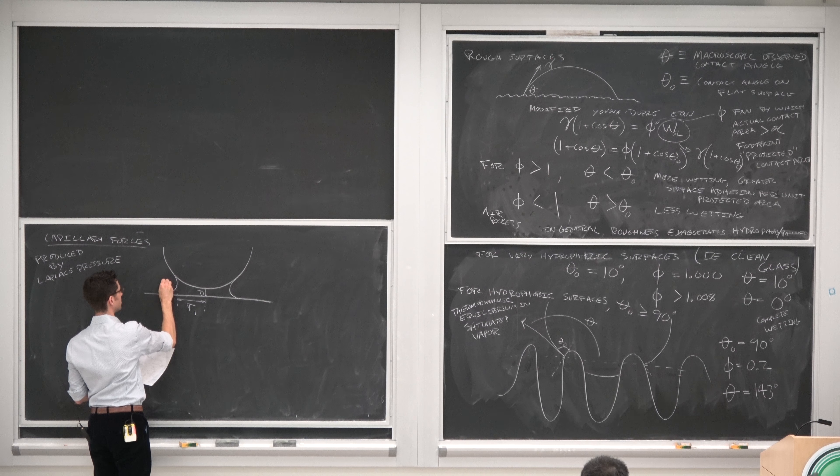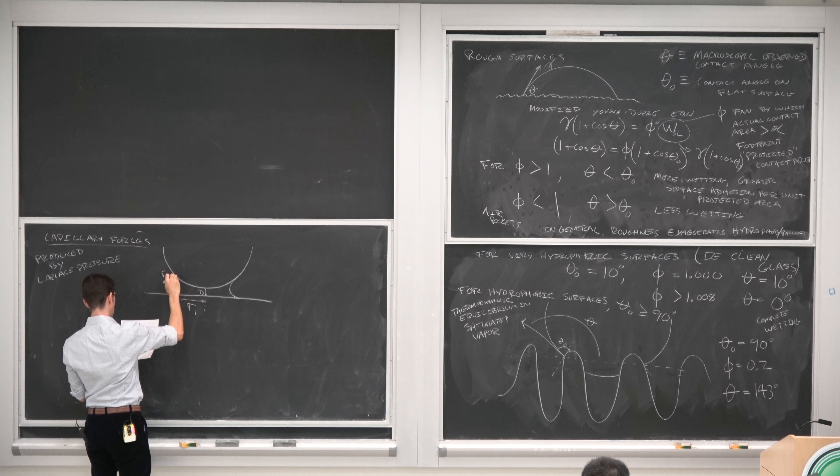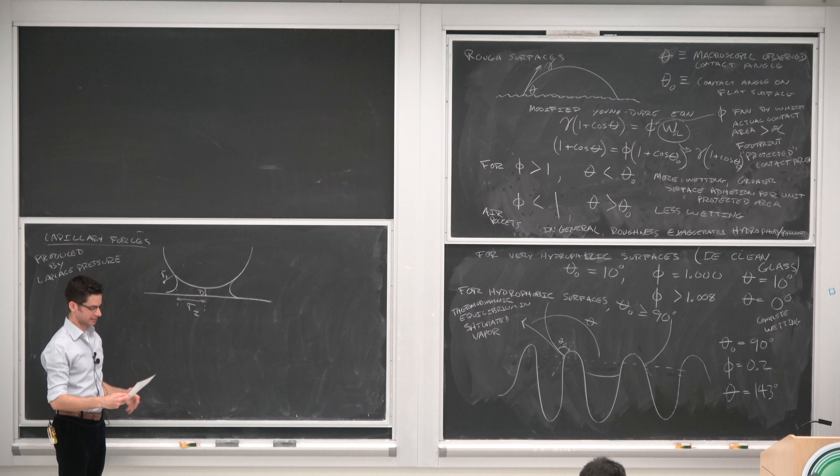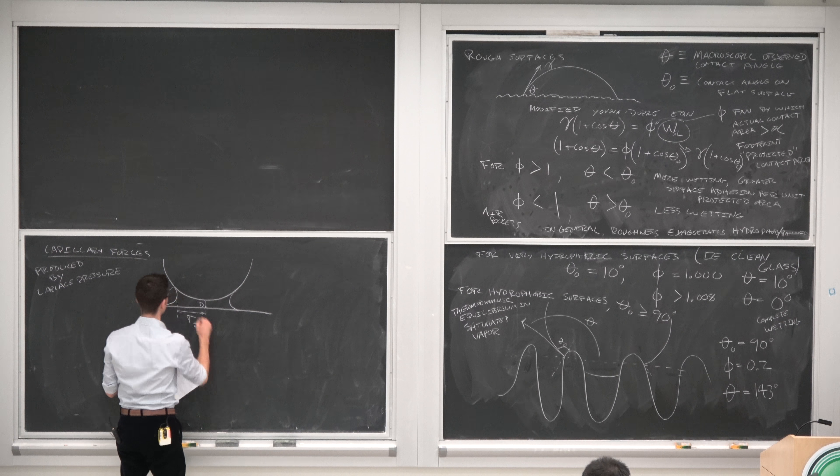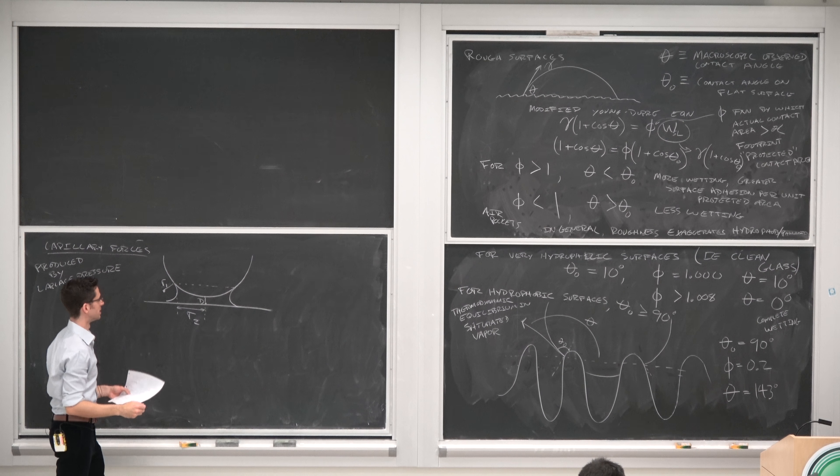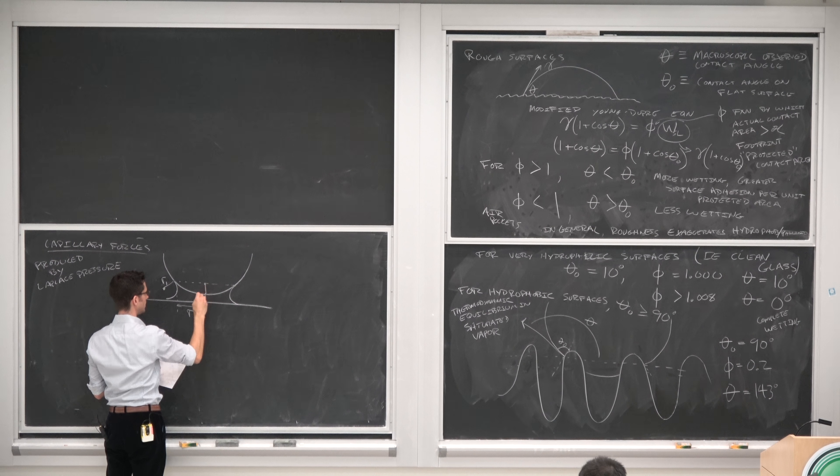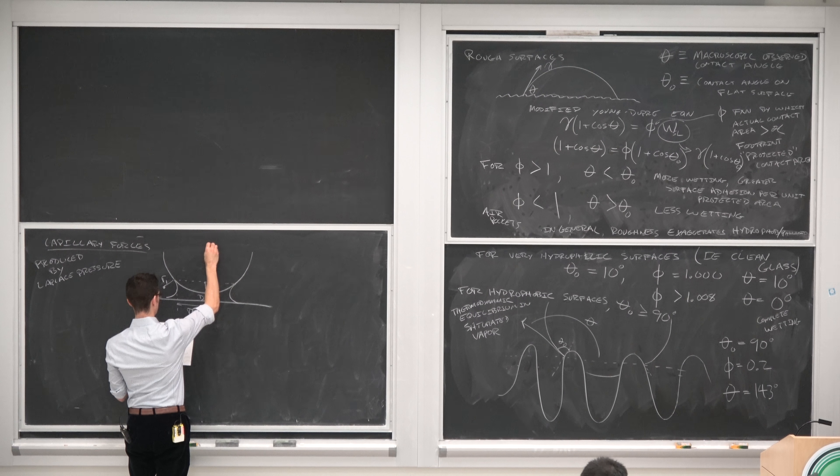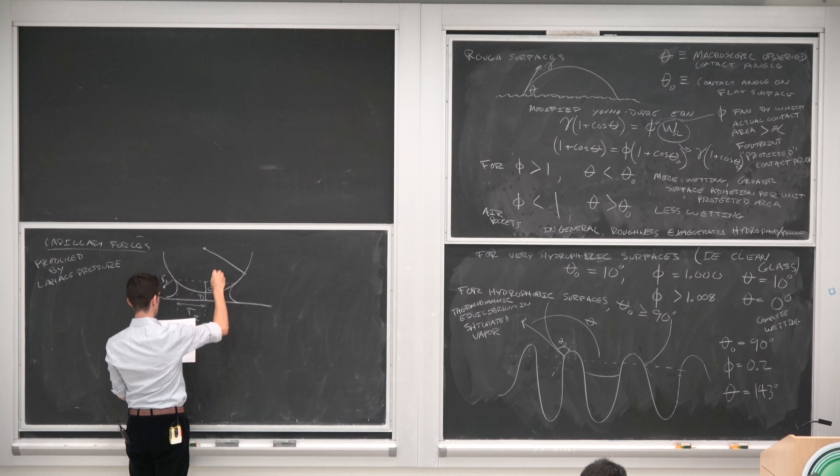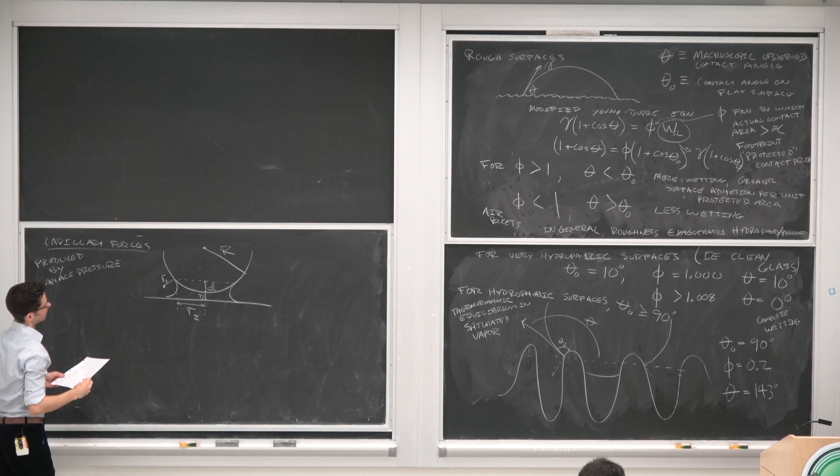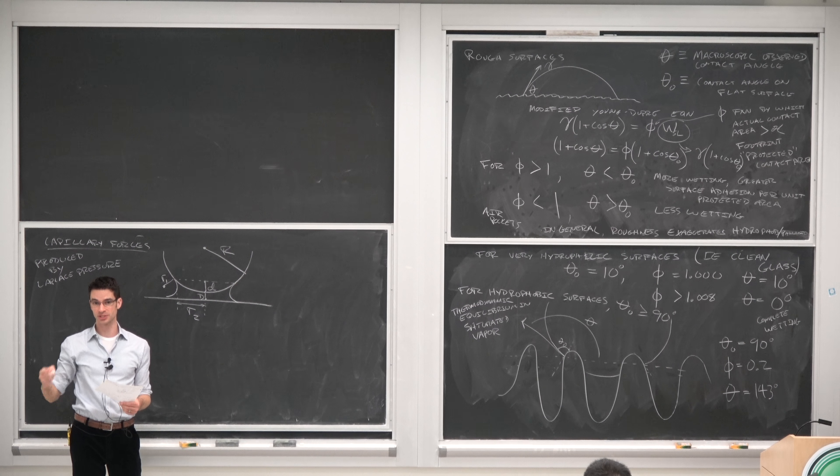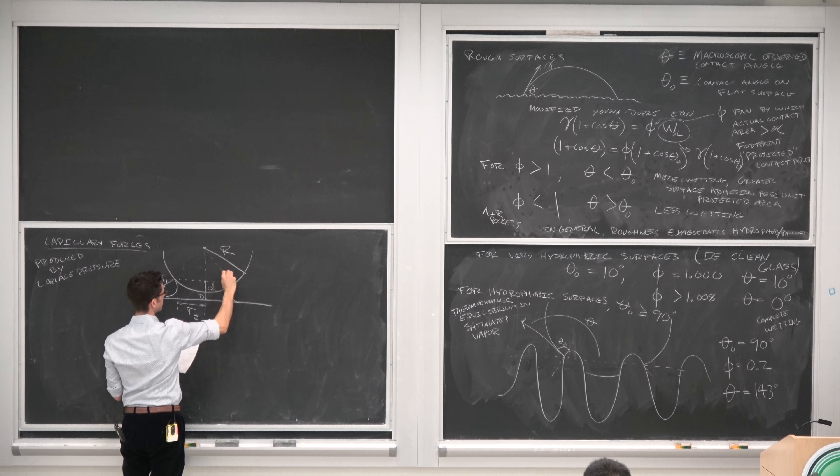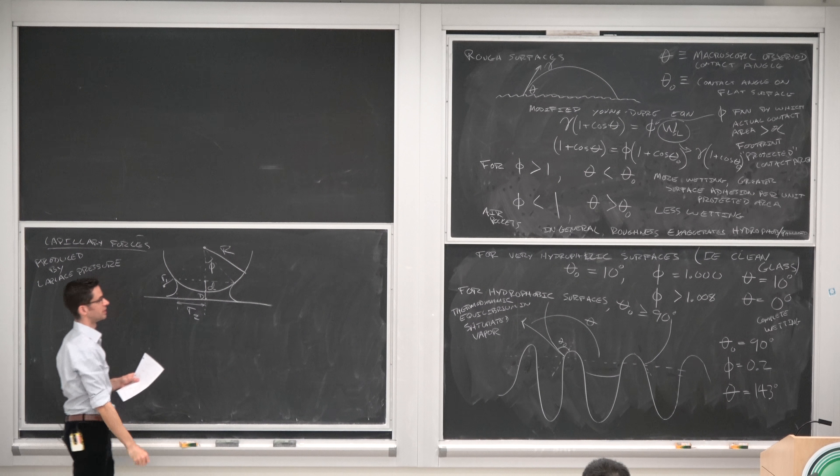We have radii that characterize this meniscus, R1 and R2. Sorry, R1 is here, and then this radius is R2. The distance between the top of the meniscus and the bottom of the round feature is lowercase d. The radius of the spherical particle or the radius of curvature of a curved tip is R, and the angle between the center point and the edge of this meniscus is phi, different phi from over there, sorry.